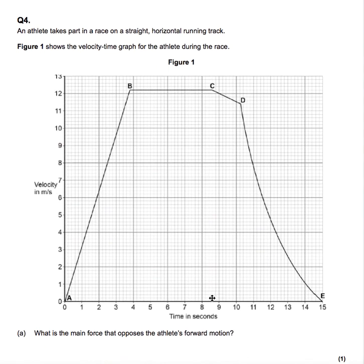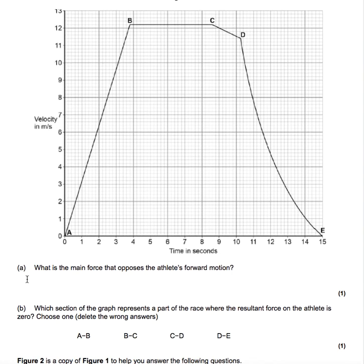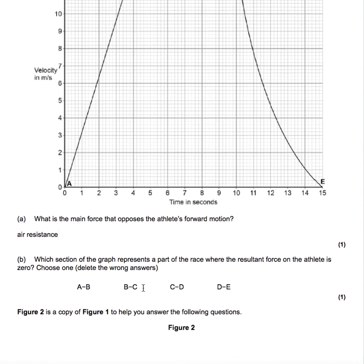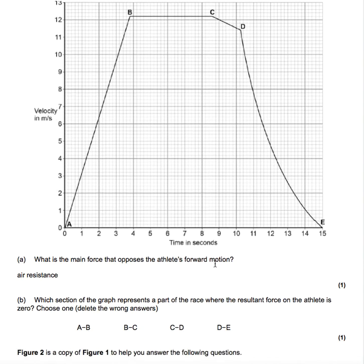Question four. An athlete takes part in a race. What's the main force that opposes the athlete's motion? Well, that's air resistance. You might say drag. Wind resistance isn't quite enough. Air resistance is what we're after. Because even if there isn't any wind, there's still going to be air resistance. Which section of the graph represents a part of the race where the resultant force on the athlete is zero? Well, you're looking for a section where there is no acceleration. Because if the resultant force is zero, by Newton's second law, F equals MA, there will be no acceleration. And that, of course, is between B and C.